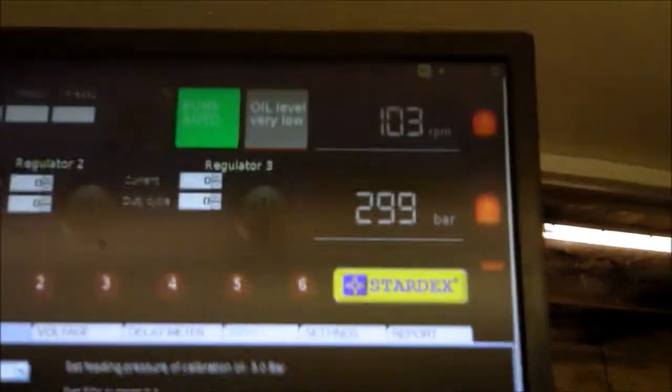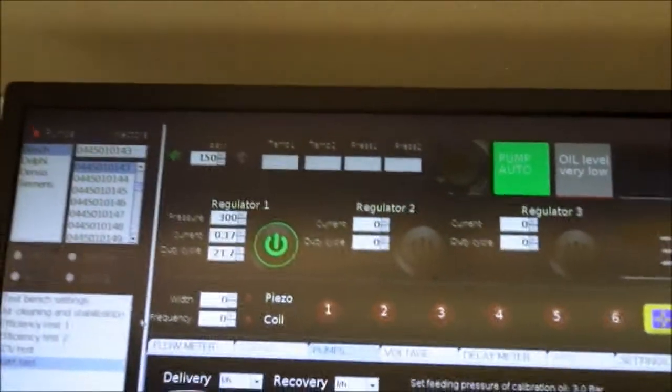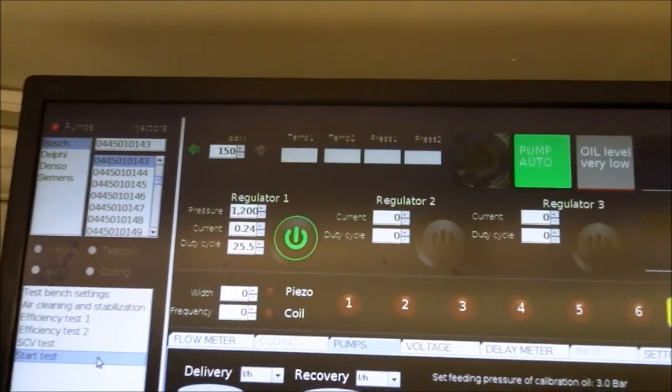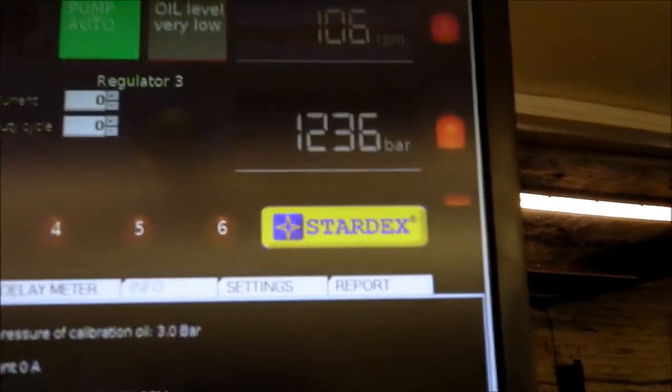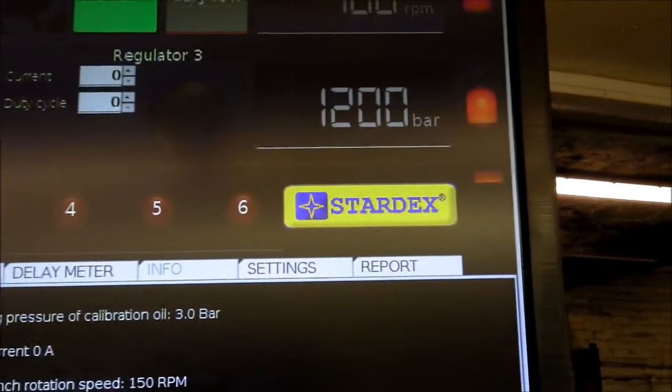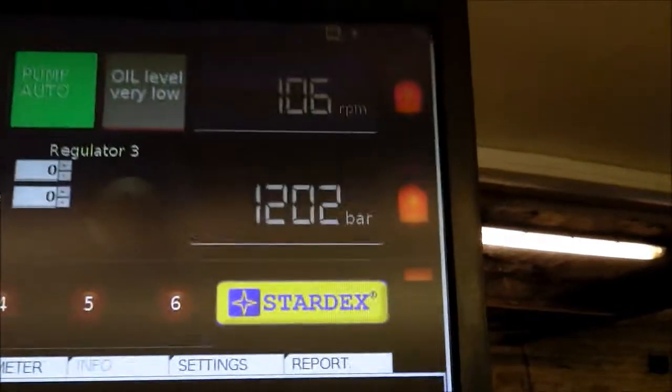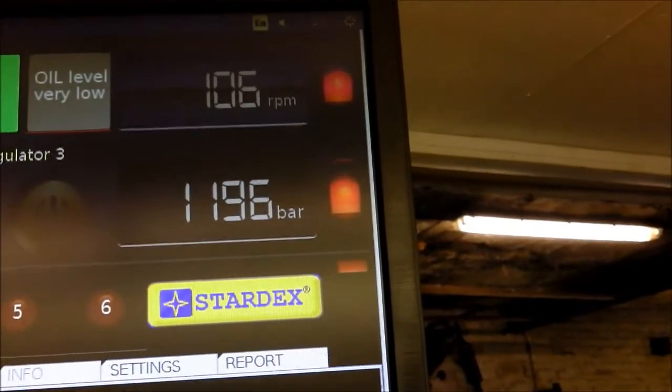Right, okay. So what we'll do now, so we're still at 100, so we're still at 100 rpm. What I'll do, I'll stop that. Now what we'll do, I'll demand 1200 bar. Okay, there you are at 1200 bar. Still only 100 rpm, we're going at 1200 bar.